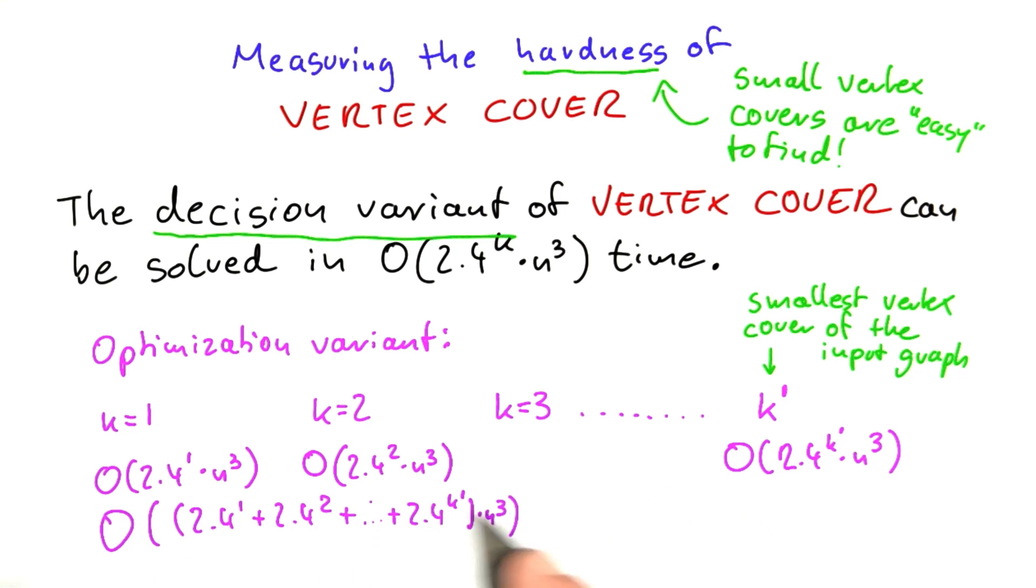If you've had a discrete math course and remember what you learned there, you will recognize this part here as a geometric series. This evaluates to (2.4^k' - 1) / (2.4 - 1), which is the same as O(2.4^k'). And k prime is the size of the smallest vertex cover times n cubed.